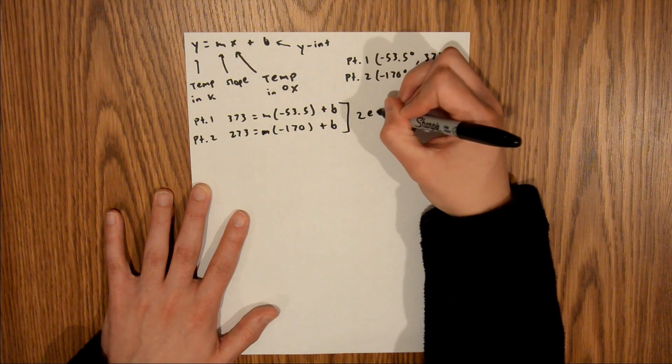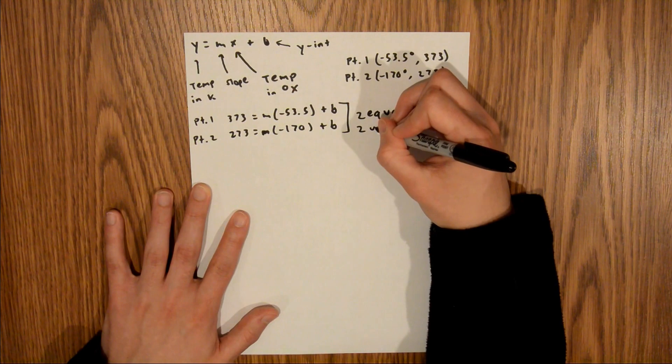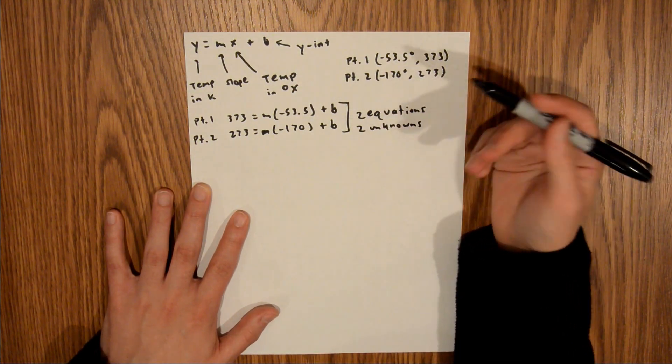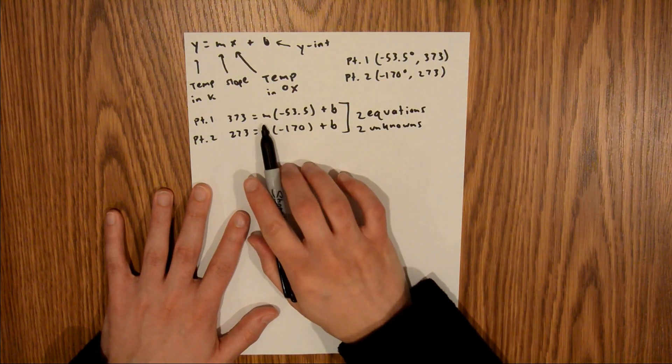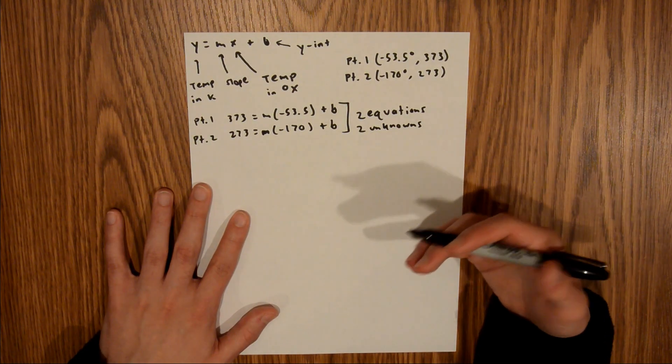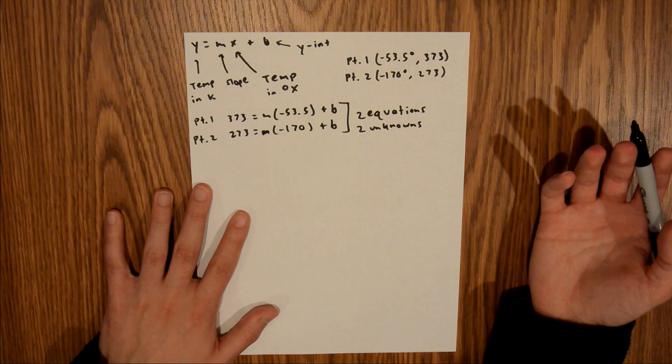So, two equations, two unknowns, meaning that these two equations can be simultaneously solved using an equation solver to give you your slope and your y-intercept. Now, if this was given to you on a test, or you weren't allowed to use a solver, you'd have to do it by hand. And so, that's what I'm going to show you right now.